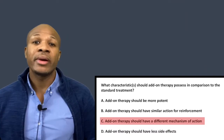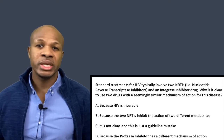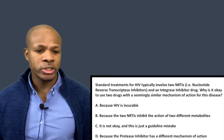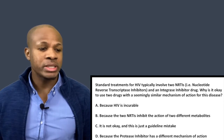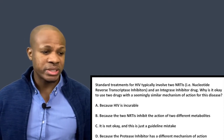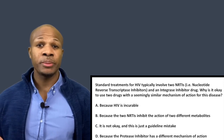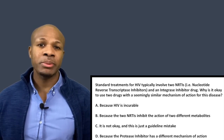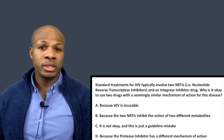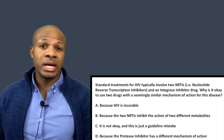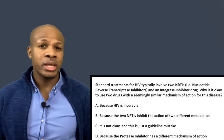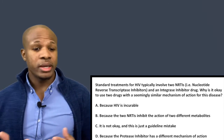Question number three: standard treatment for HIV typically involves two NRTIs — nucleotide reverse transcriptase inhibitors — and a protease inhibitor drug. Why is it okay to use two drugs with a seemingly similar mechanism of action for this disease? This might seem like a contradiction to what we just said about giving patients drugs with different mechanisms of action, since two NRTIs are from the same drug class and have basically the same mechanism of action.